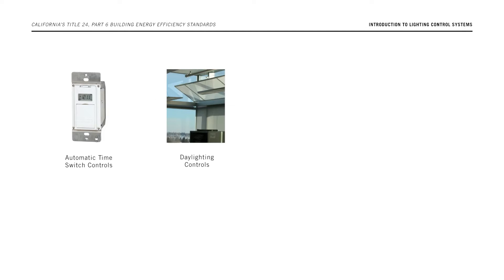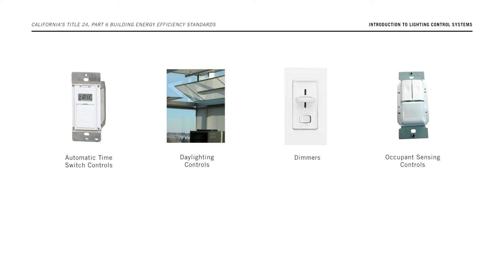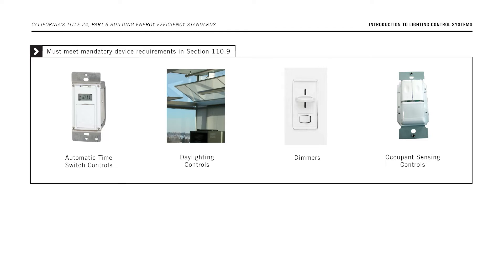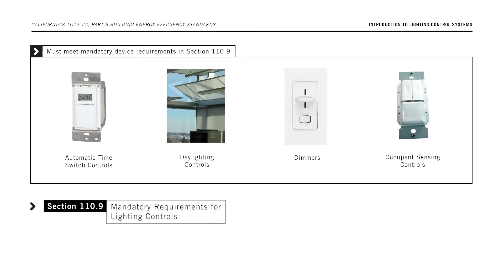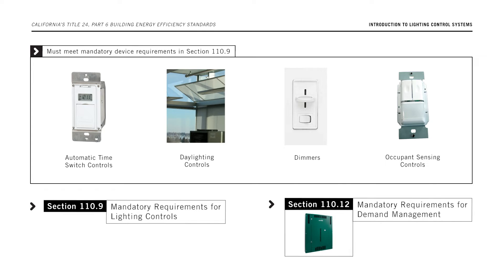Automatic time switch controls, daylighting controls, dimmers, and occupant sensing controls must meet mandatory device requirements in Section 110.9 of the Energy Code. Demand response controls must meet the requirements in Section 110.12 of the Energy Code.